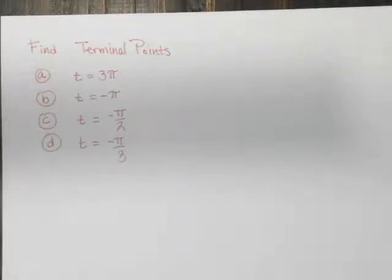We're going to run through some quick examples in talking about terminal points. Well, what exactly is a terminal point? A terminal point is where something ends. In this case, the measure of an angle.